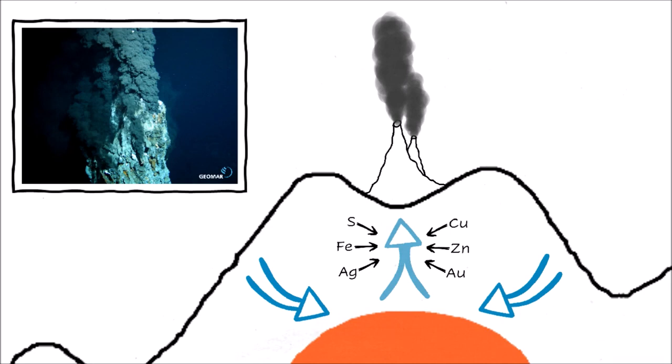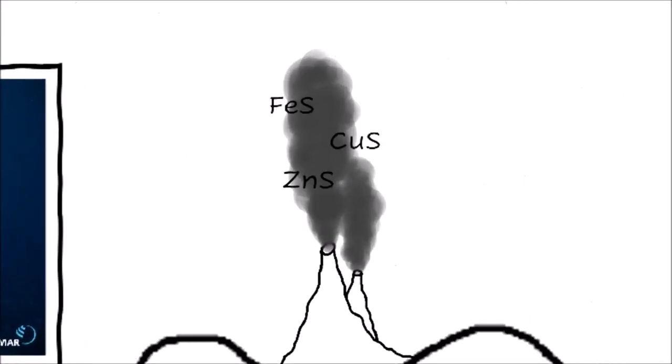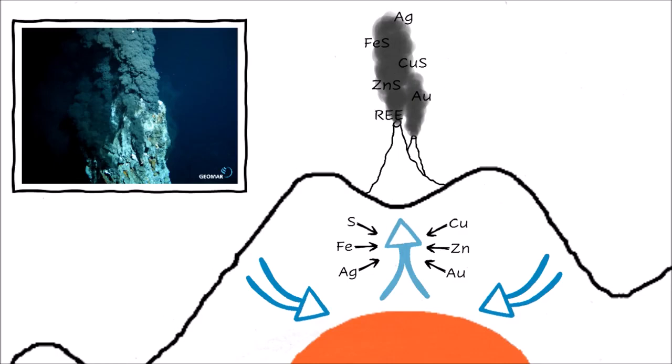The dense vent fluid consists mainly of sulfites. You get a sulfite when you combine sulfur with a metal. So for example, you will find copper, iron, or zinc sulfites in this fluid, as well as some comparably high concentrations of silver, gold, and some rare earth elements.